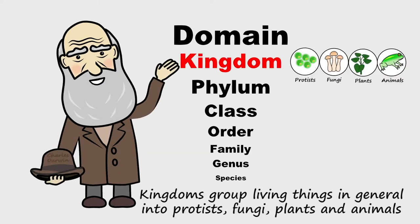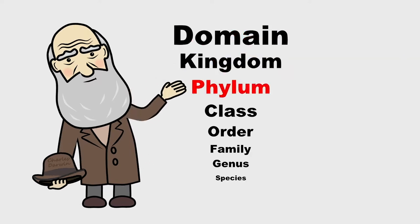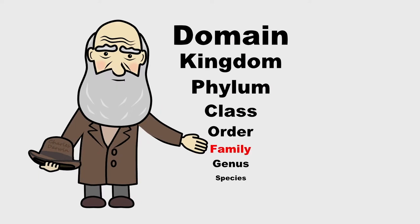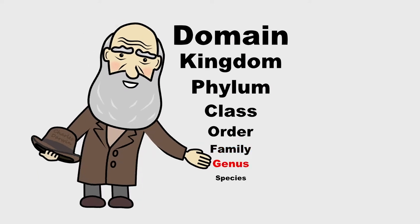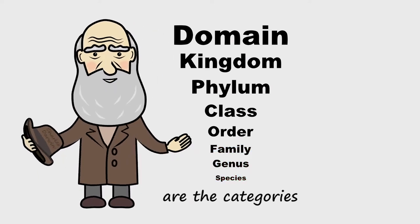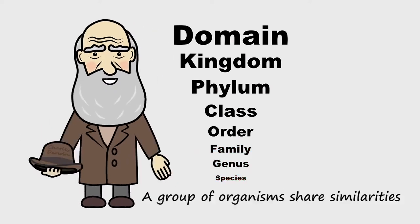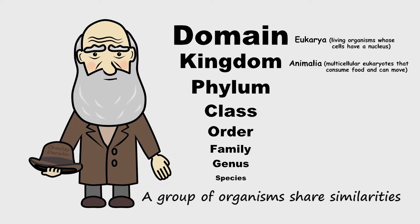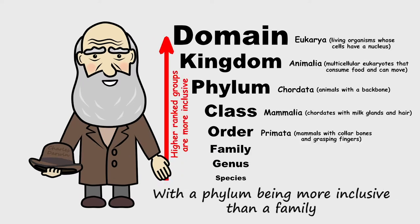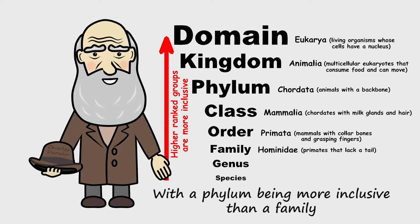Kingdoms group living things in general into protists, fungi, plants, and animals. A group of organisms share similarities, with the phylum being more inclusive than a family.